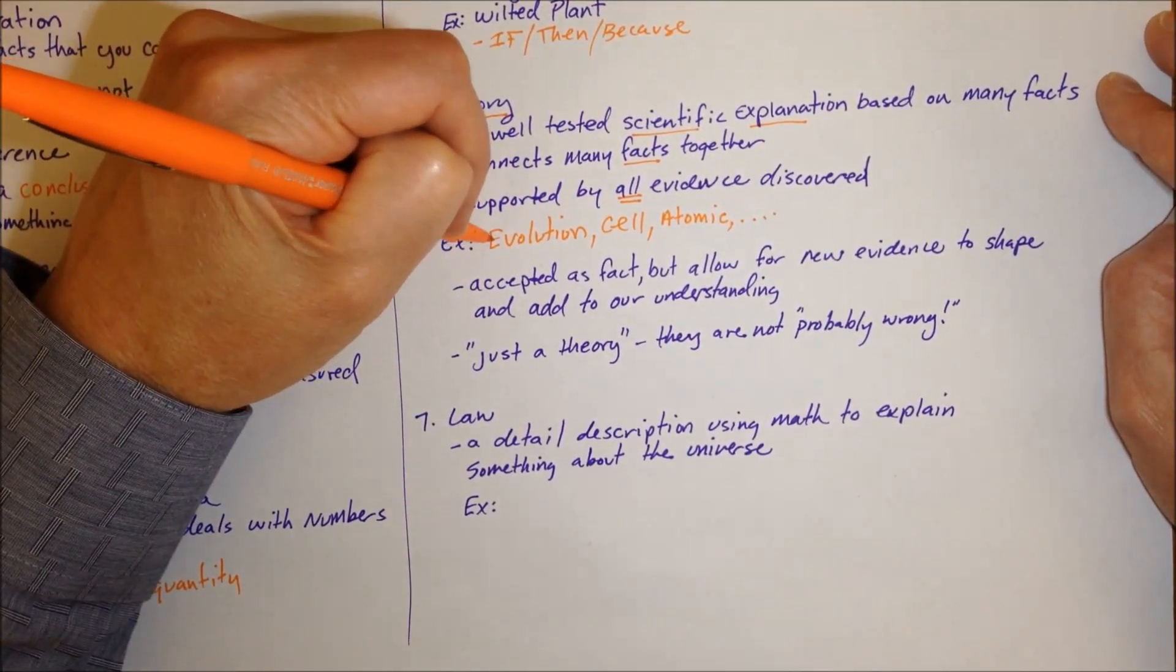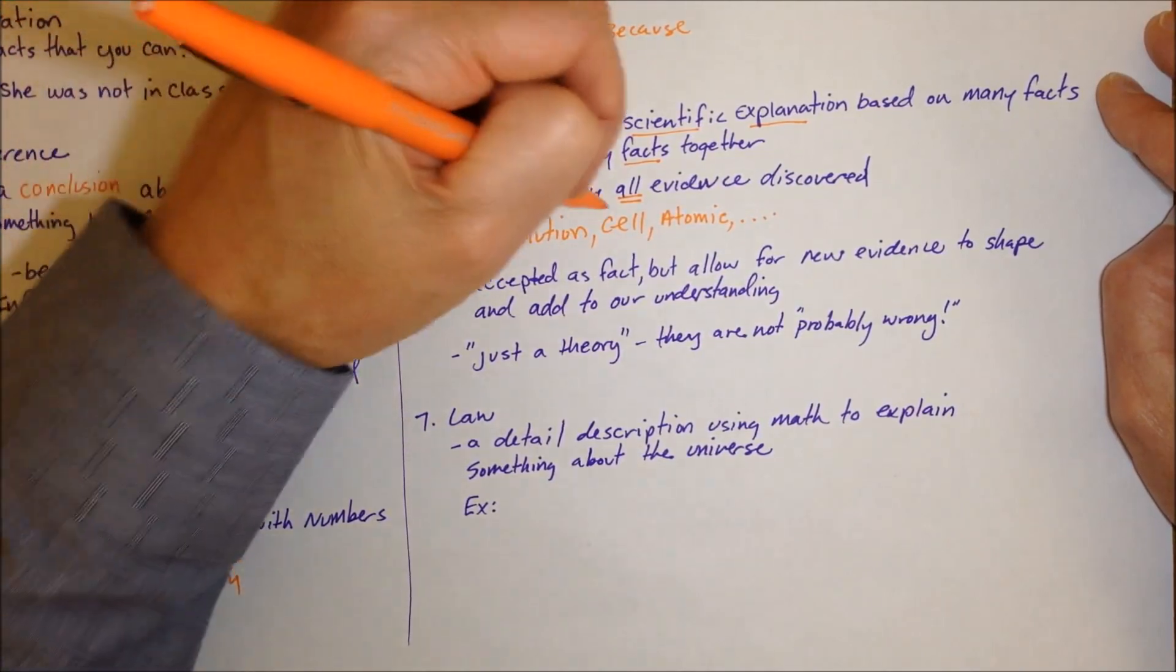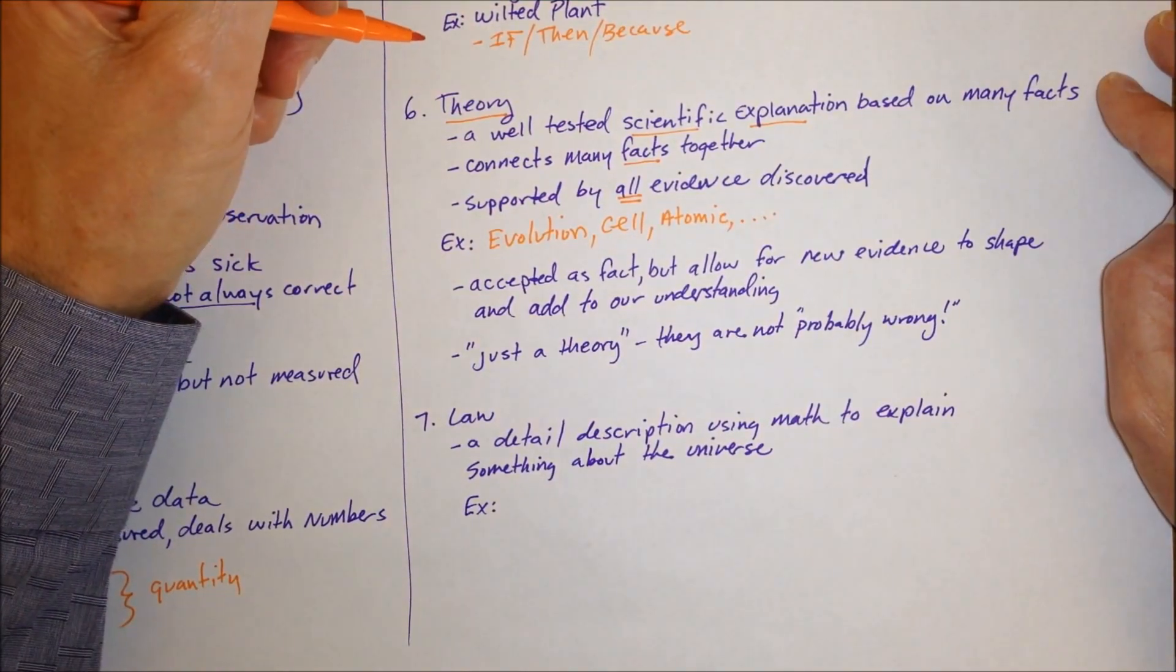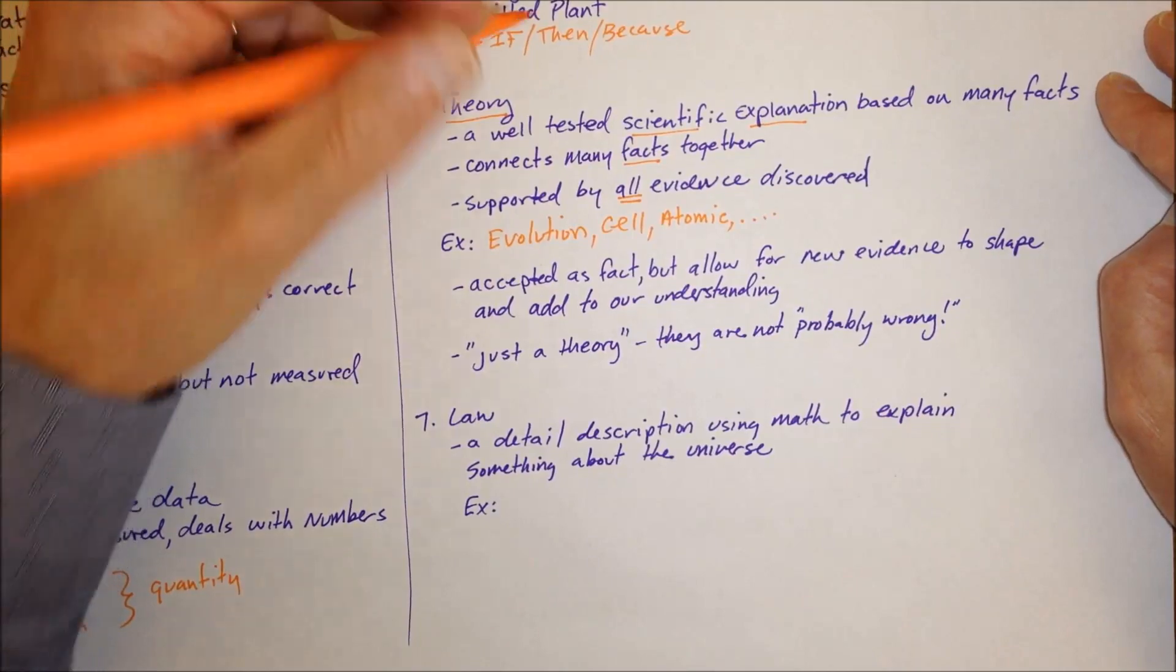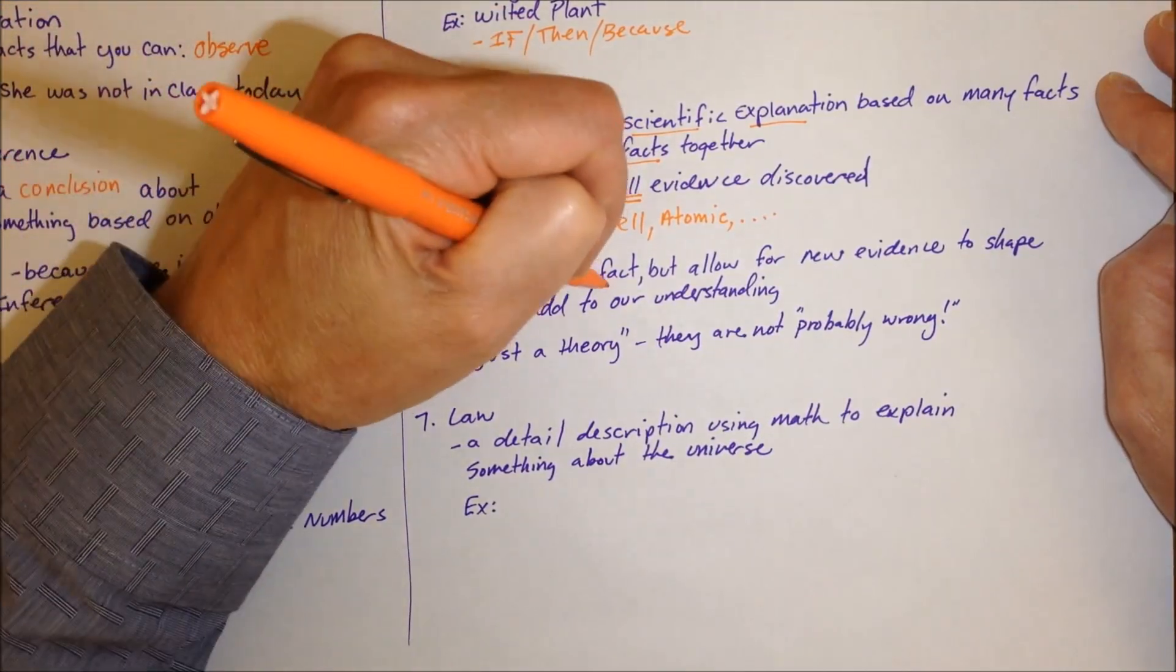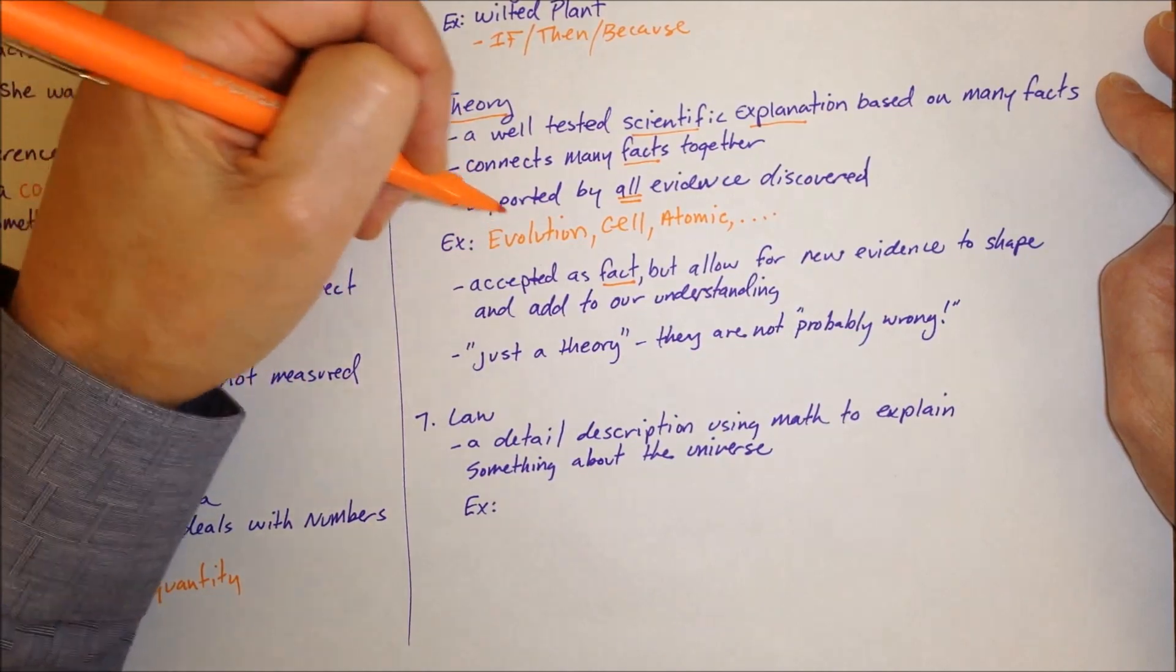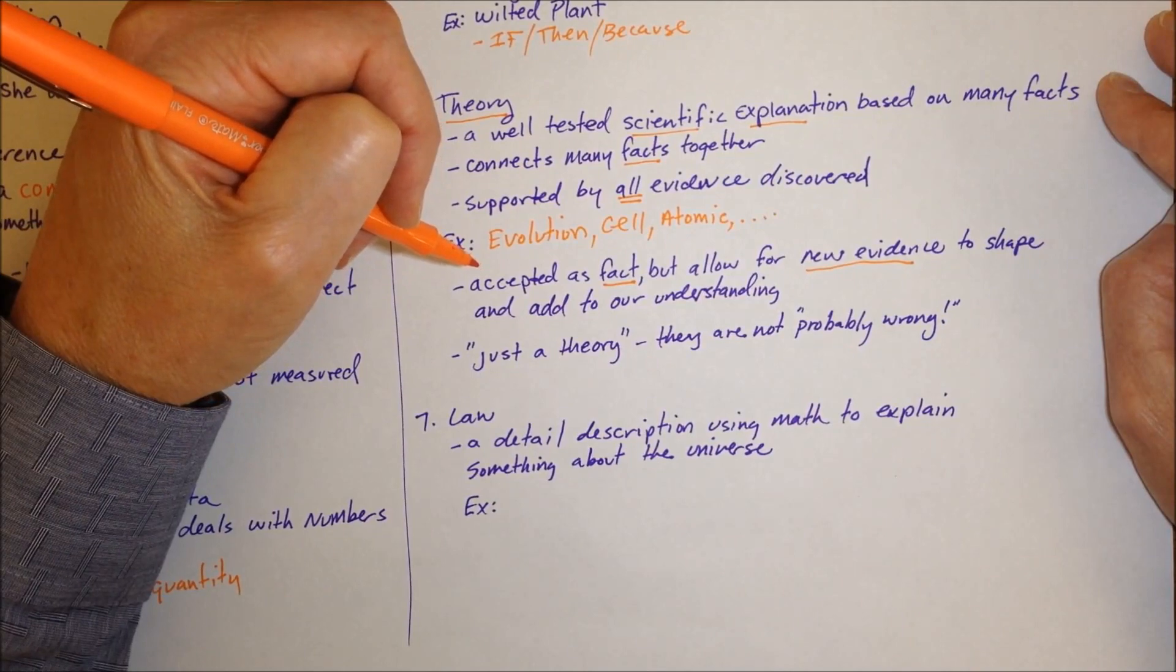The key for theory is it's supported by all the evidence discovered. So we have all the evidence we've ever looked at under the question of evolution shows that yeah things are related. All the evidence we've had to see if things are made out of little units called cells, every time we study that we find they're made out of cells. Theories are accepted as fact but we don't call them fact because we know that theories can find new evidence and that might change or add to our understanding a little bit.